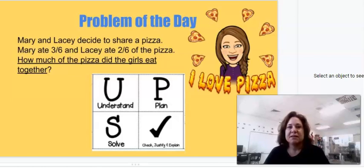Let's read that again. Mary and Lacey decide to share a pizza. Mary ate three-sixths of the pizza and Lacey ate two-sixths of the pizza. How much of the pizza did the girls eat together?